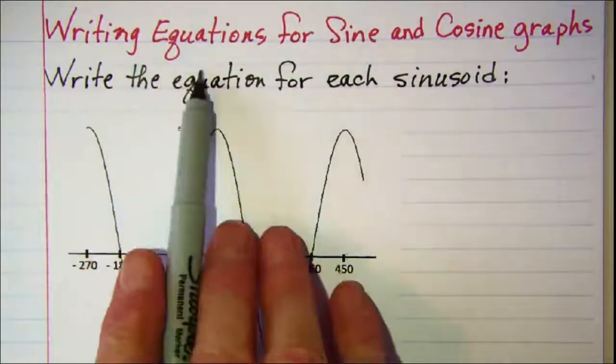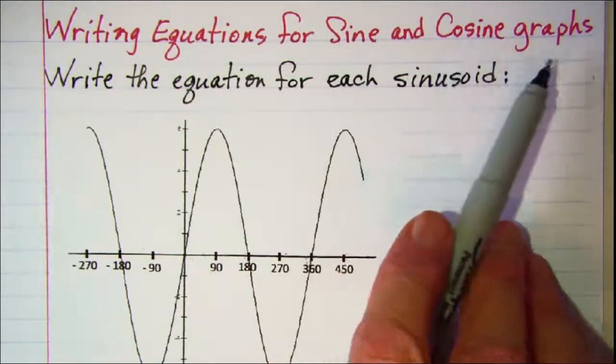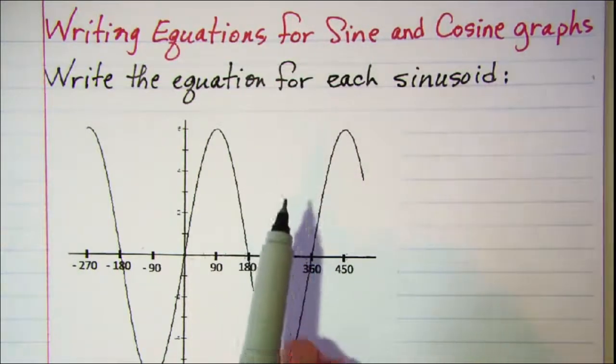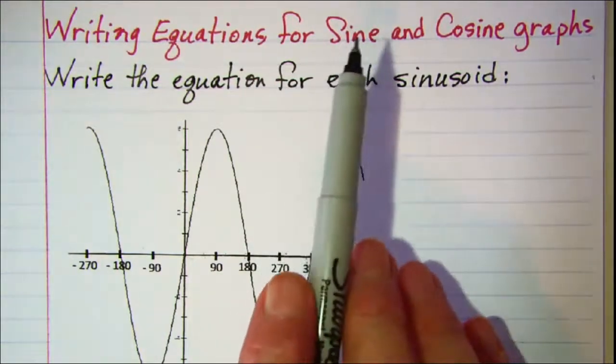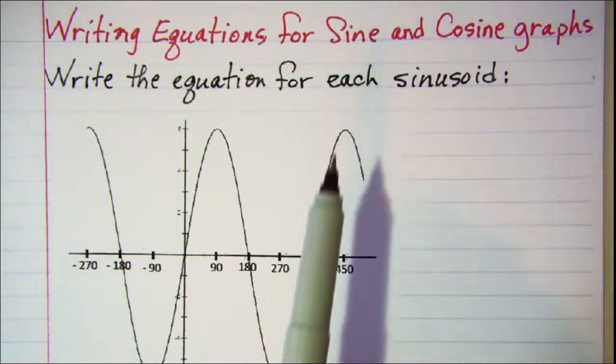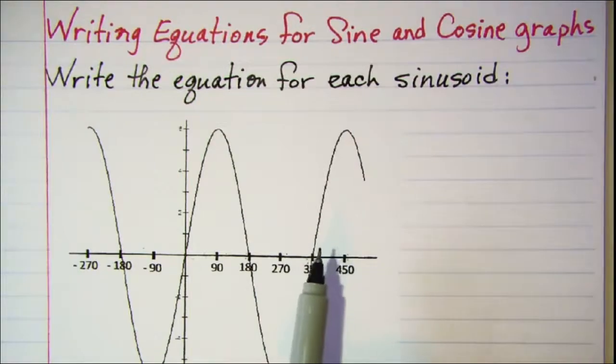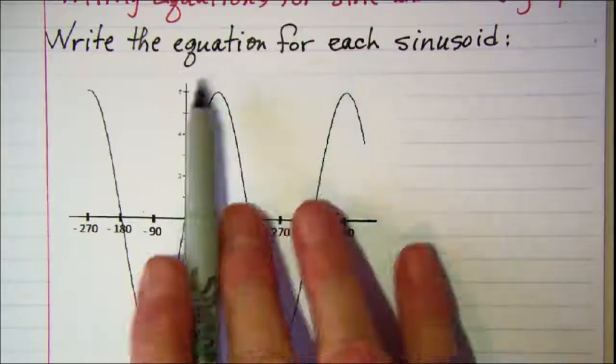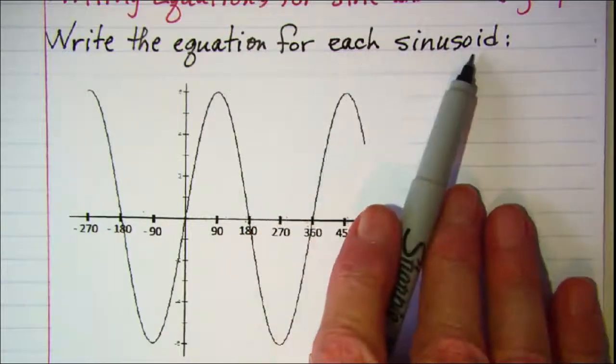In this video we'll be writing equations for sine and cosine graphs. Now the only thing that's different on all of these graphs is that some are sine and some are cosine, and then the amplitude is changed. So that's what we're going to be looking for with these. Our directions are to write the equation for each sinusoid.